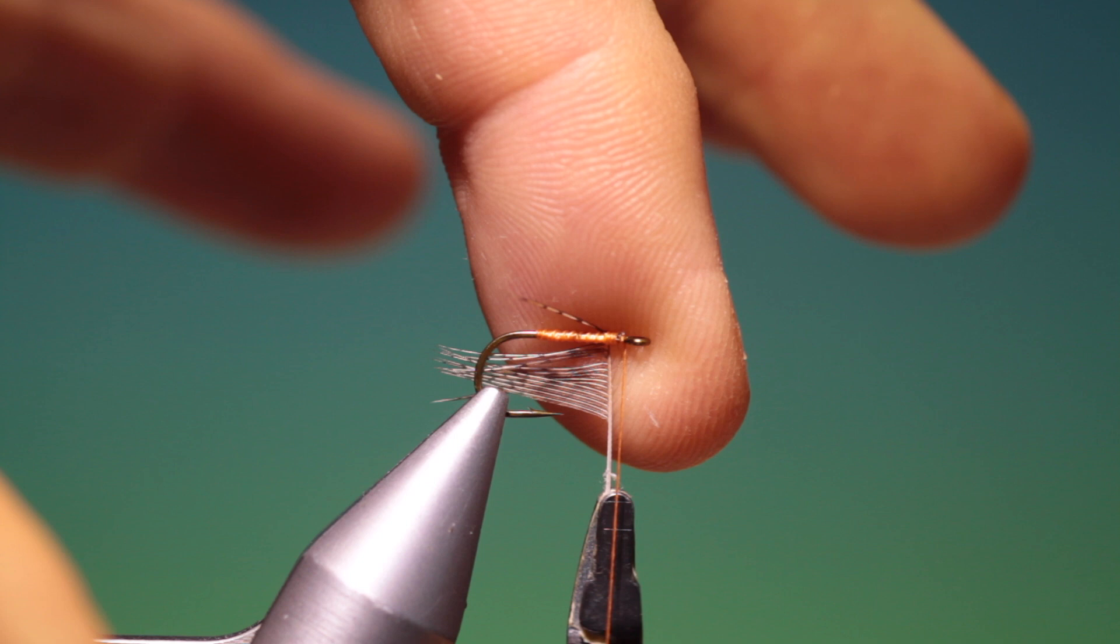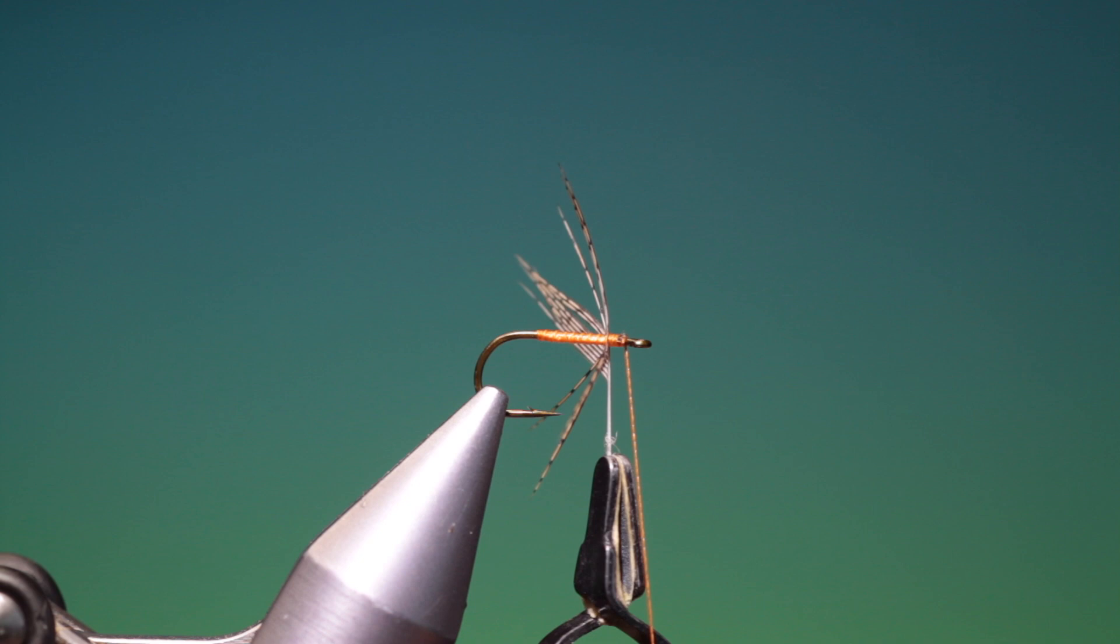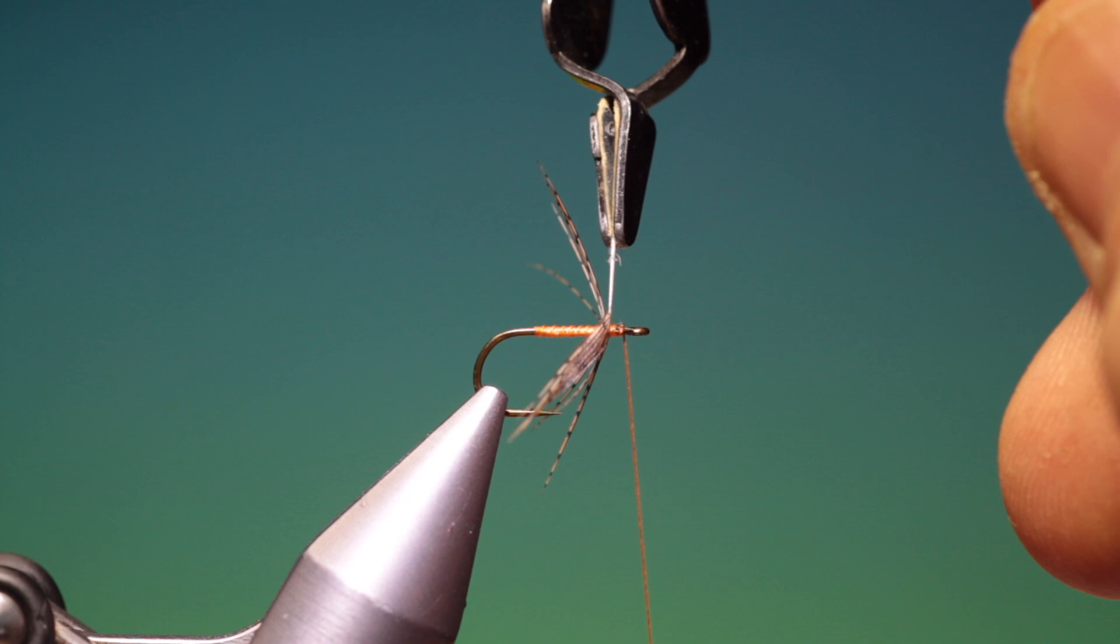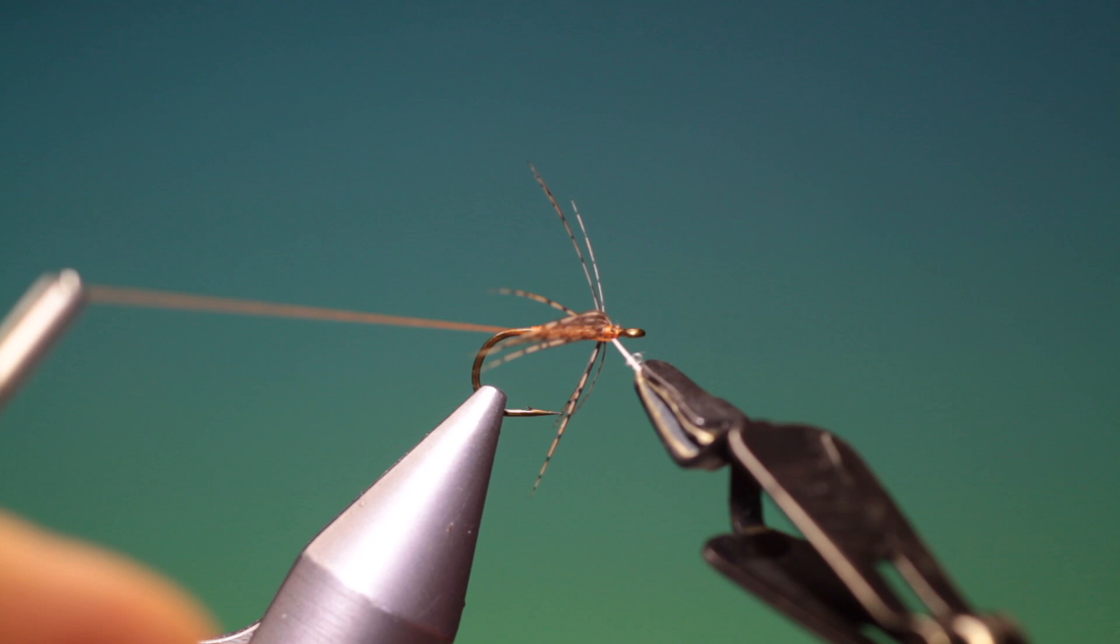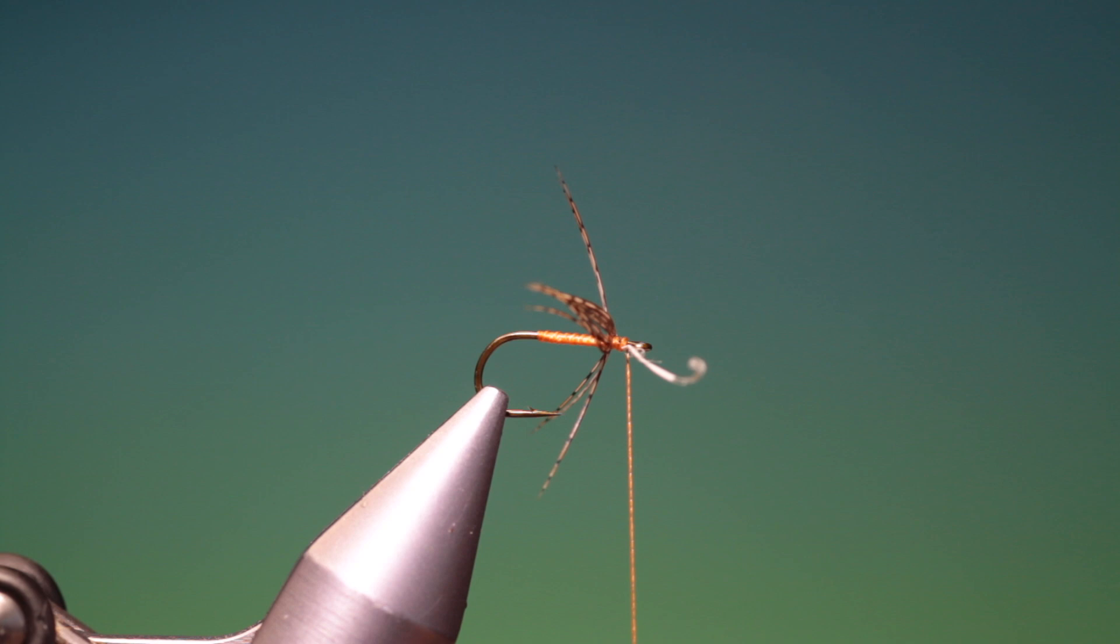Pass it over on that side. Pass it over on that side. And then we go in front of the end. Secure the hackle stem. With a couple of turns.